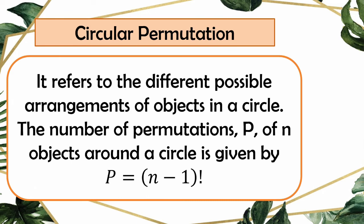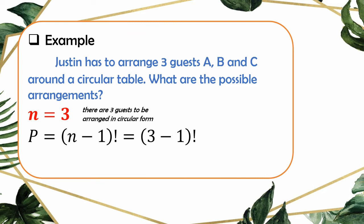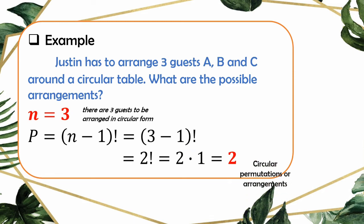Now let's have circular permutations. This refers to the different possible arrangements of objects in a circle. The number of permutations P of N objects around a circle is given by P equals (N minus 1) factorial. Example: Justin has to arrange 3 guests — A, B, and C — around a circular table. Our N is 3. So (3 minus 1) factorial equals 2 factorial equals 2 times 1, giving us 2 circular permutations. Justin will have 2 arrangements for his 3 guests.